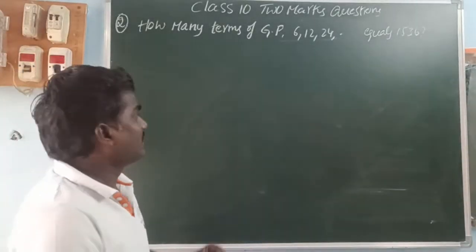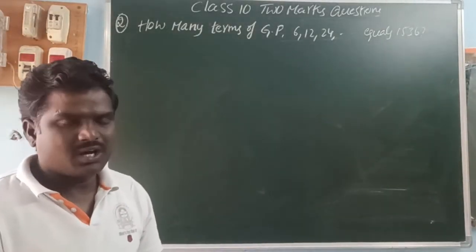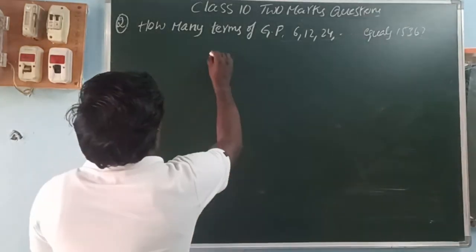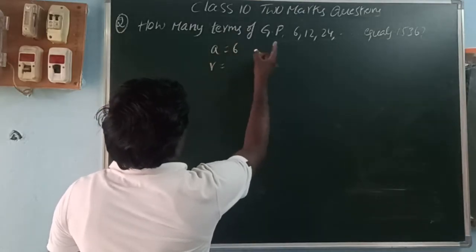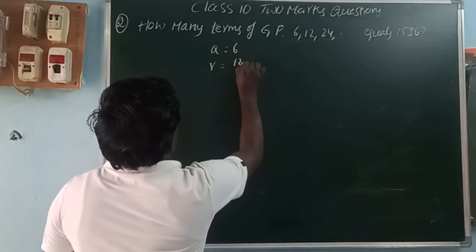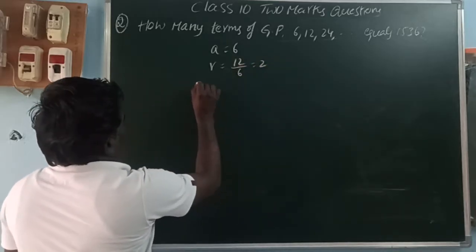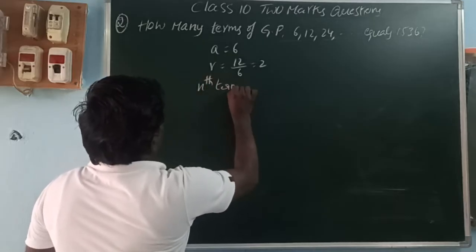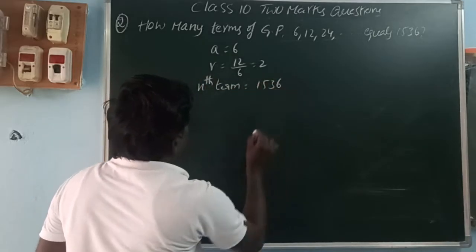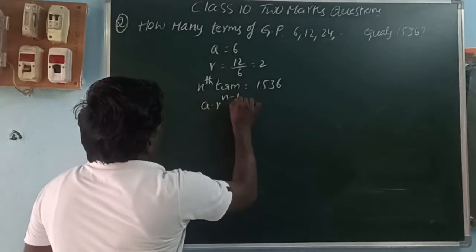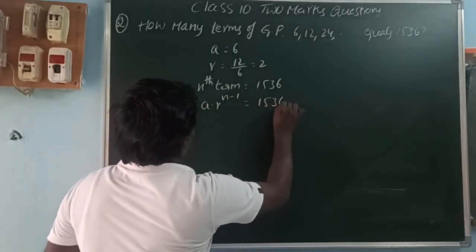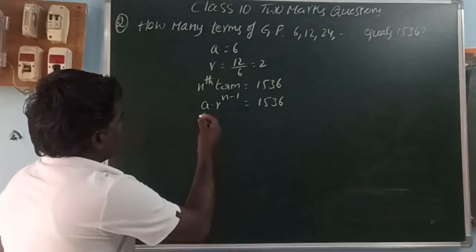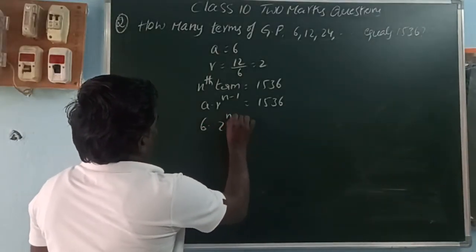First find the first term and common ratio. The common ratio is the ratio between two consecutive terms. Here a = 6, and r = 12/6 = 2. The nth term formula is a × r^(n-1) = 1536, so 6 × 2^(n-1) = 1536.